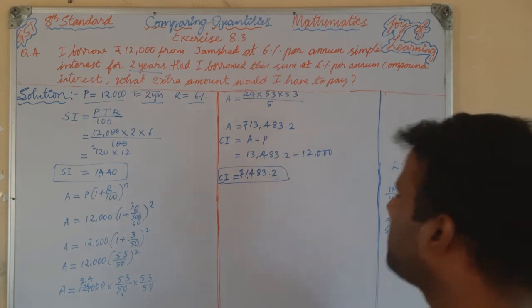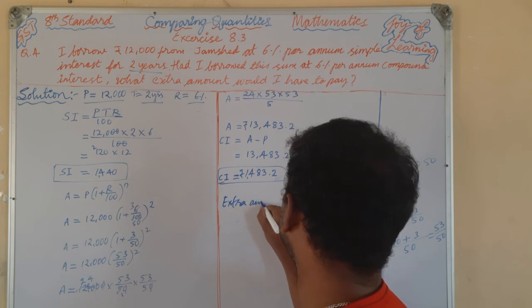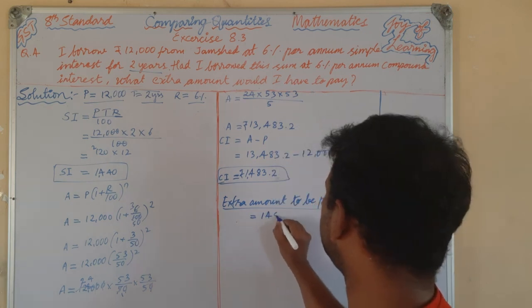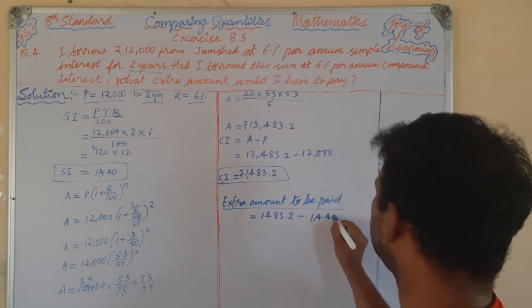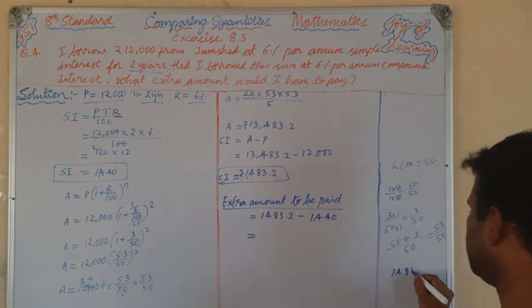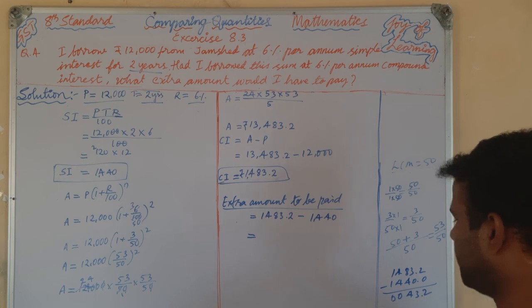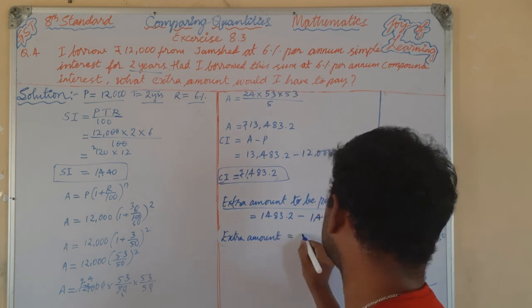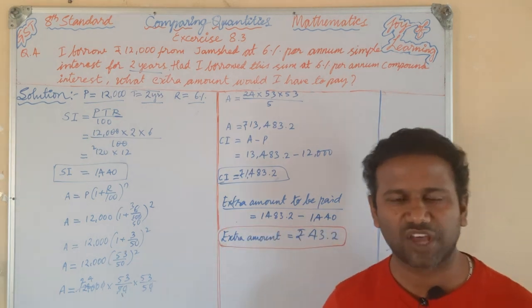What extra amount would I have to pay? Extra amount = compound interest minus simple interest = 1,483.2 minus 1,440.0 = 43.2 rupees extra.